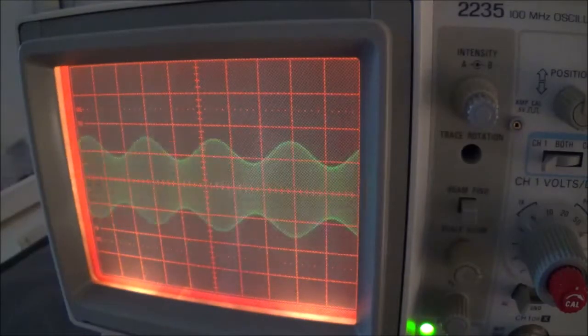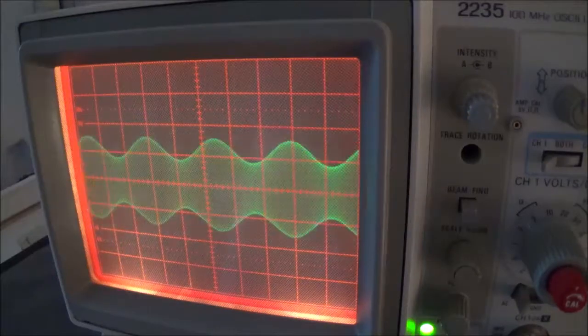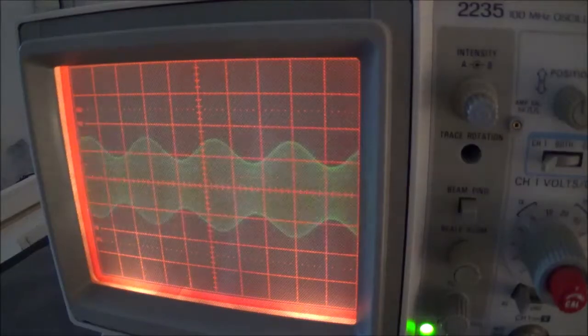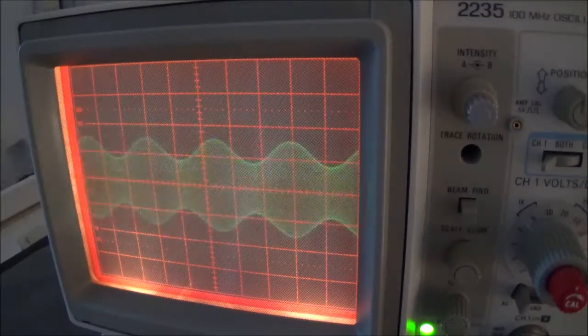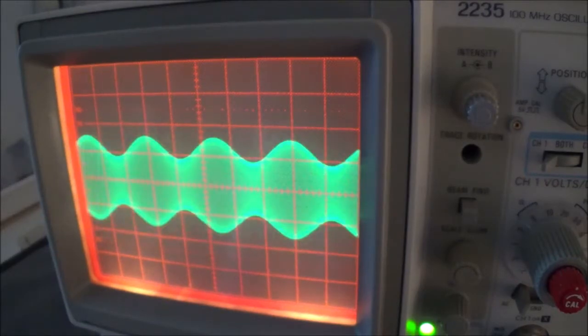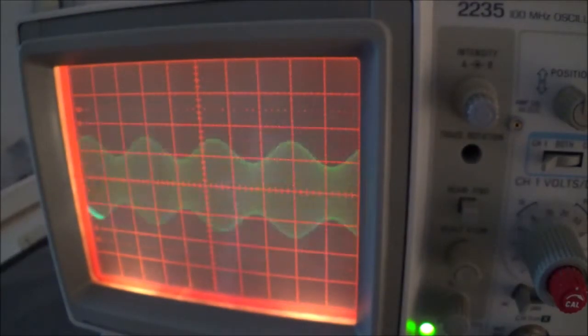But what do you do if your RF generator doesn't have a modulation percentage indicator? I was using a Leader generator up to last year that didn't have that. But the one I'm using now, which is a Panasonic, actually has that, so I just read the indicator.